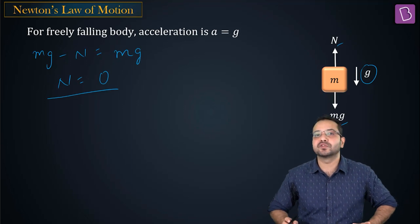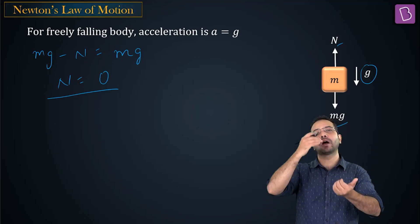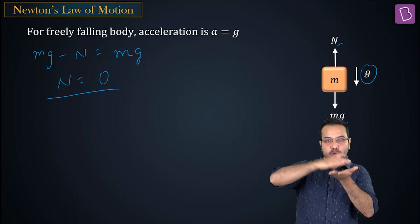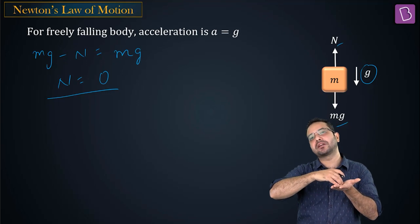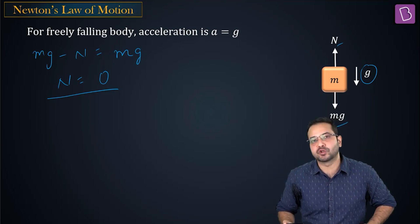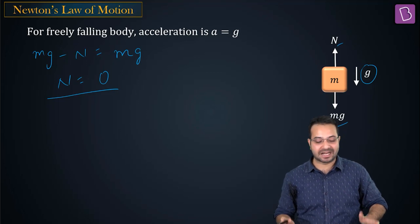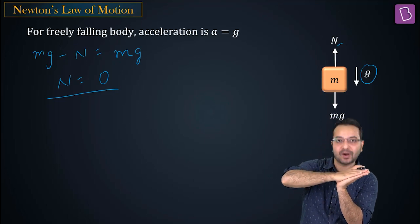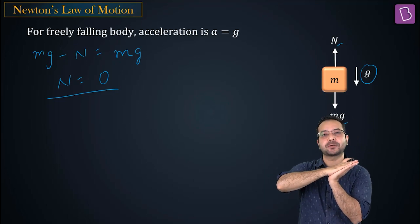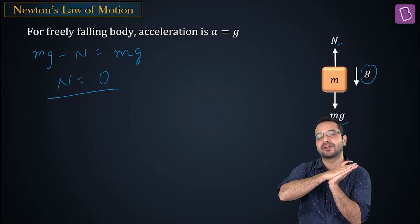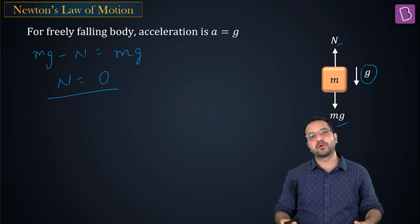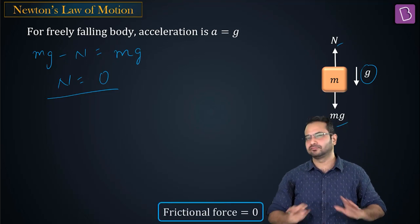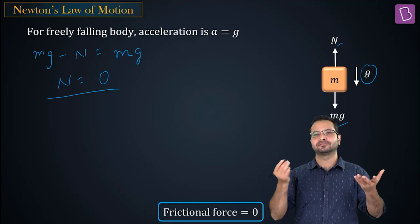The normal force is zero because both the block and the elevator are accelerating downward with g, so the block doesn't push the floor and the floor doesn't push the block. There is no contact between the block and the elevator, so there is no friction. The frictional force is zero.